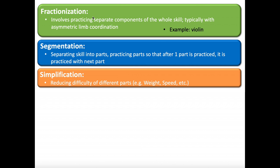The other kind is a little more rare — it's called fractionization. This is applicable when you have asymmetric limb coordination, meaning the left hand is doing something different than the right. A really good example is any string instrument: violin, viola, cello, double bass, or guitar. If you're playing guitar right-handed, your left hand fingers different strings to get different chords or notes, while your right hand holds the pick and plucks the strings — your hands are doing completely different things. With fractionization, you might practice what your left hand does by itself, without plucking with the right, and then do the same with the right hand. But again, you should always bring those components back together, because in real life you use both hands to play guitar.